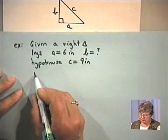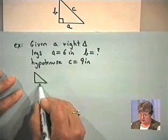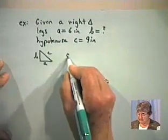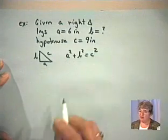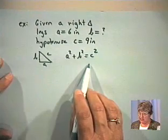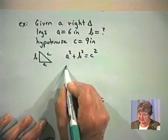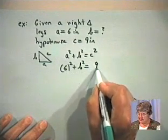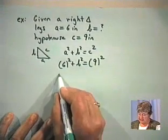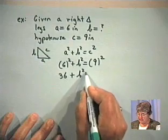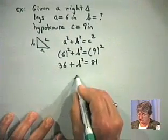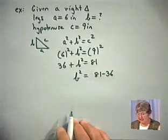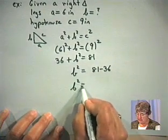Since we have a right triangle, we know that we can use the Pythagorean Theorem: A squared plus B squared equals C squared. All we need to do is fill in the information into this formula and solve for B. Since A is 6 inches, 6 squared plus B squared equals C squared. But C is 9, so that gives us 9 squared on the right. So we have 36 plus B squared equals 81, which means B squared equals 81 minus 36, which is 45.